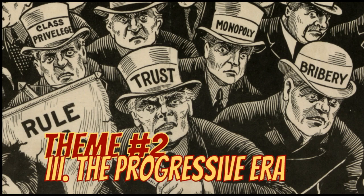Welcome to video number three. This is 2.3 in our discussion on the economic growth of the United States in the late 1800s, early 1900s. Today's discussion is on a movement known as the Progressive Era. The Progressive Era is, for everything that the Gilded Age was — being this hollow shell that looked so beautiful on the outside but was really rotten on the inside — the Progressive Era is this attempt by Americans to clean up society, to reform it, to make it actually as golden as the Gilded Age hoped it would be.